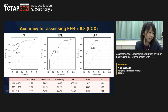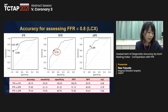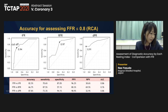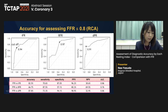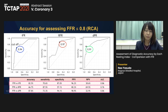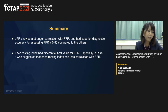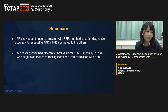In LCX, diagnostic ability of iFR and DPR were high, and cutoff values differed somewhat in the RFR group. Each resting index had different cutoff values for FFR, and these values were higher than the well-known cutoff value of 0.89. DPR showed stronger correlation with FFR and had superior diagnostic accuracy compared to others. Each resting index had different cutoff values, especially in RCA, where each resting index showed less correlation with FFR.